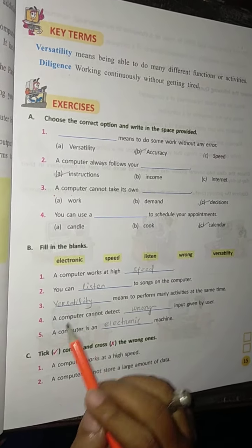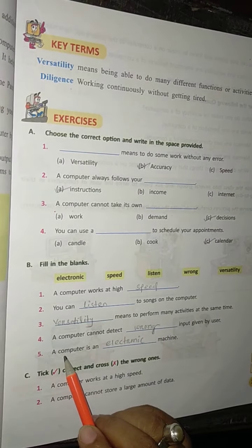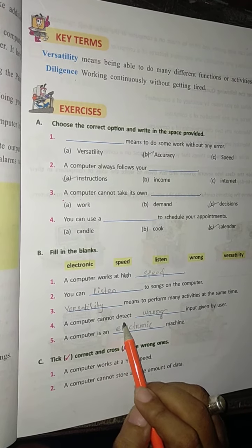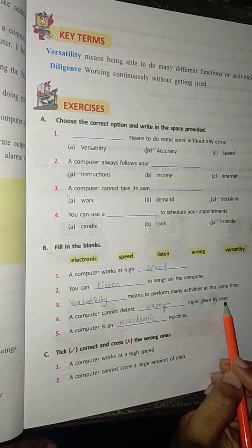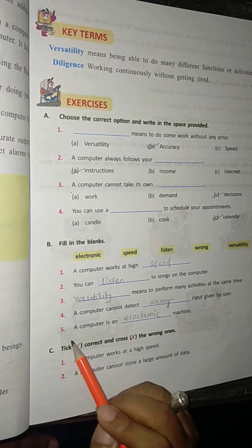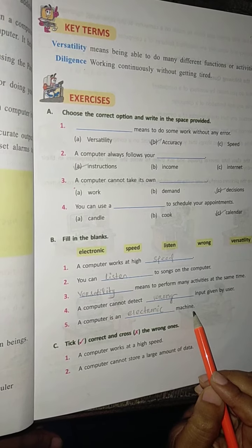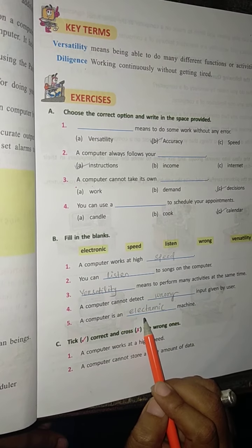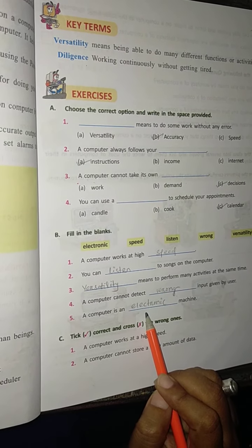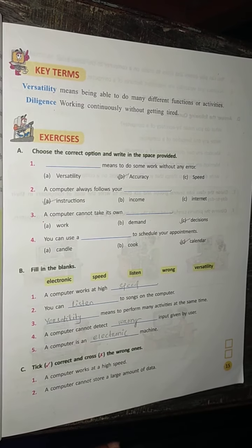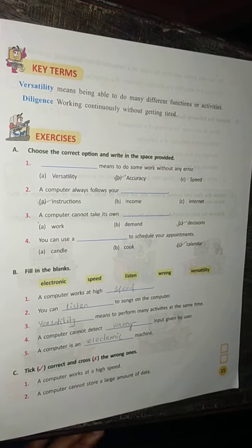Question four: a computer cannot detect blank input given by the user. Answer: wrong — a computer cannot detect wrong input given by the user. Question five: a computer is an blank machine. Answer: electronic — a computer is an electronic machine. In our next class we will discuss the other questions and answers. Thank you, God bless you.